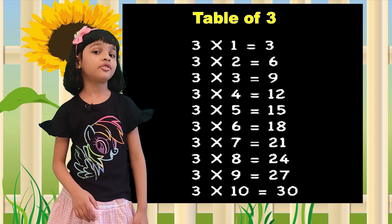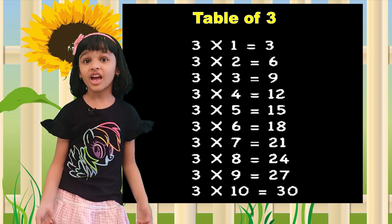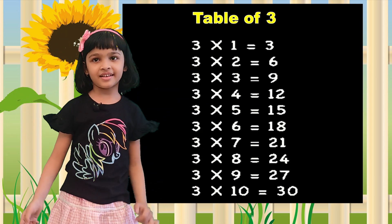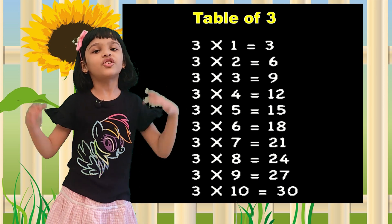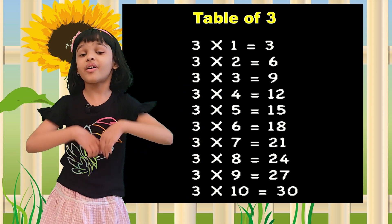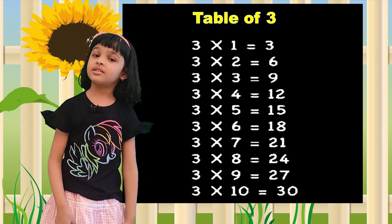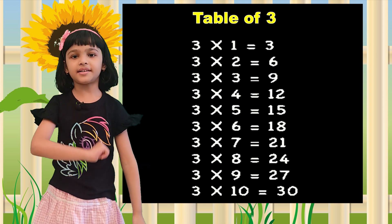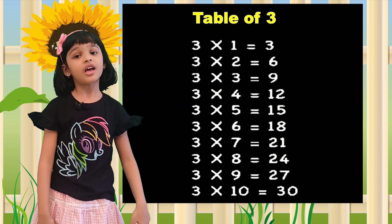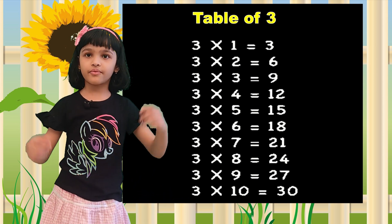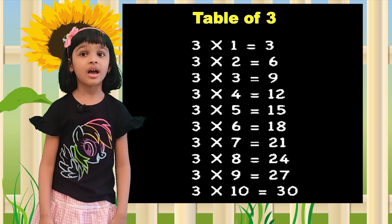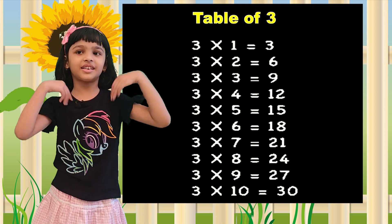3 1 the 3, 3 2 the 6, 3 3 the 9, 3 4 the 12, 3 5 the 15, 3 6 the 18, 3 7 the 21, 3 8 the 24, 3 9 the 27, 3 10 the 30.